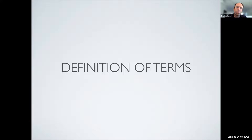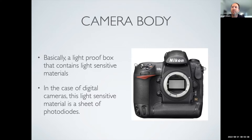We'll start with a definition of terms to establish an even playing field. The camera body is basically the light-proof box that contains some kind of photosensitive material. Back in the day, that was actual film. Today it's a sensor that reads light — it's exposed when the shutter opens, and that exposure gives us the photograph. Our phones work the same way; they're just a light-proof box as well.